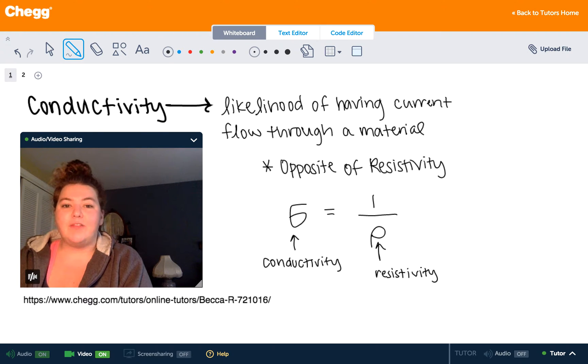you've probably heard of if you're in Physics 2, if you're in a material science course, or if you're taking electricity and magnetism or something like that. Conductivity is associated with circuits and electric current and things like that.